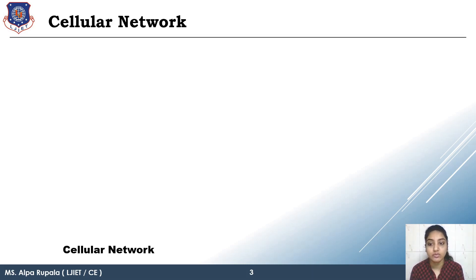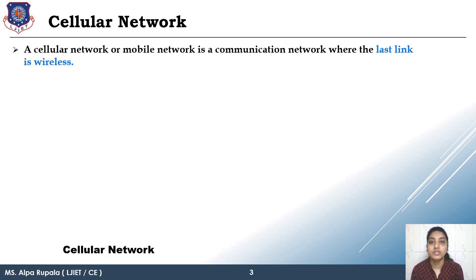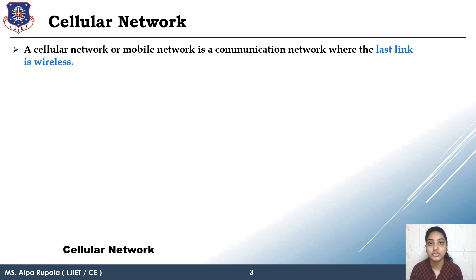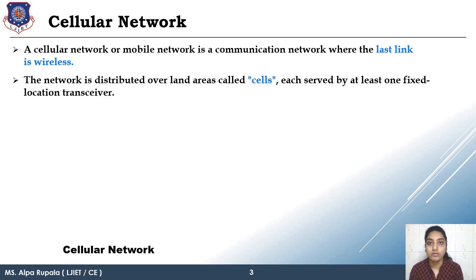First of all, we are considering what is a cellular network. When we talk about the wireless network, it is not that everything is wireless — it is just that your mobile device is connected to a wireless endpoint only. All other fundamentals could be wired or wireless, but the last link of connection to your mobile device should be wireless. The geographical area of the earth is divided into subparts known as cells, which is why it is called a cellular network. Even your mobile phone is known as a cell phone because it is based on cellular network technology.